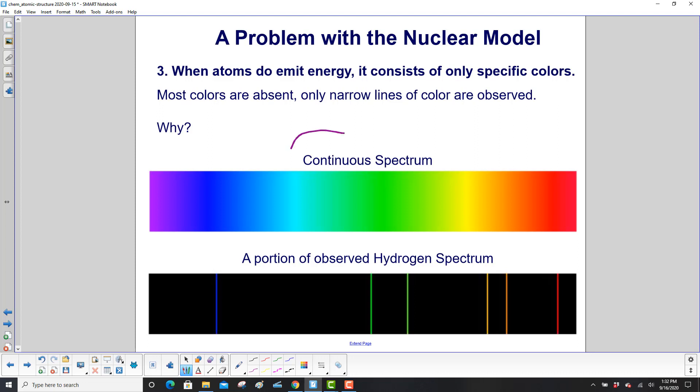So this top one is a continuous spectrum. So you might expect that the atom would emit all these colors and you'd see a spectrum like that. But in fact, and here's a portion of the observed hydrogen spectrum,